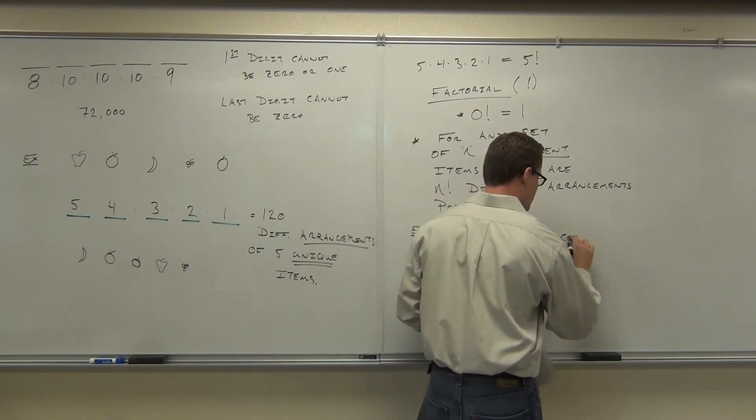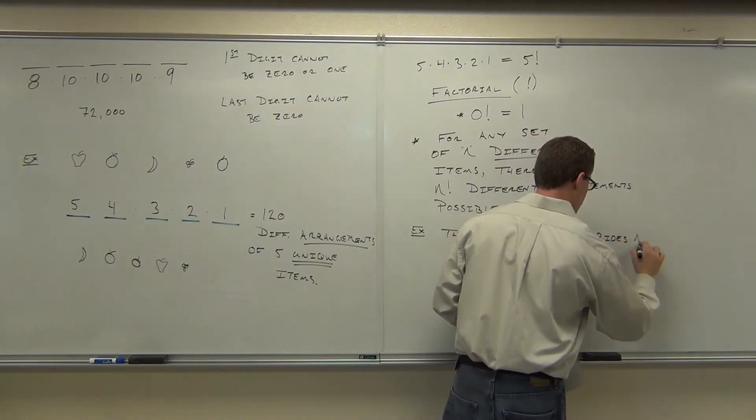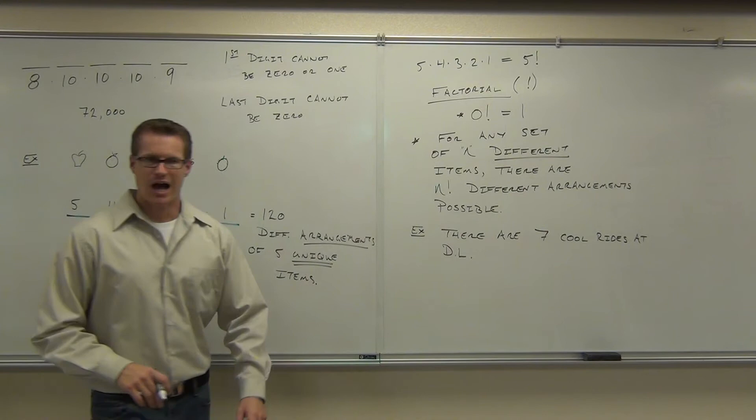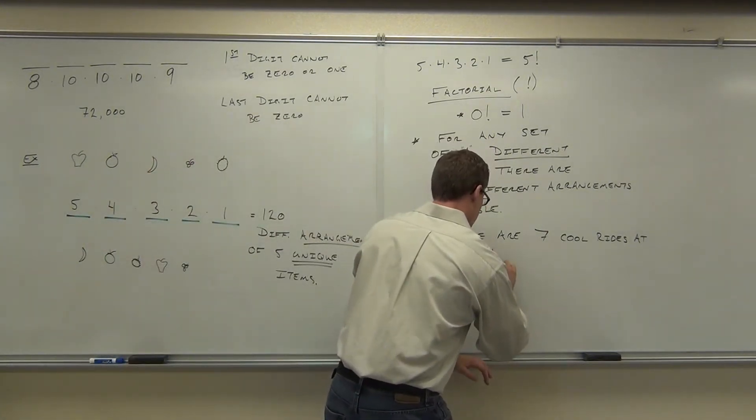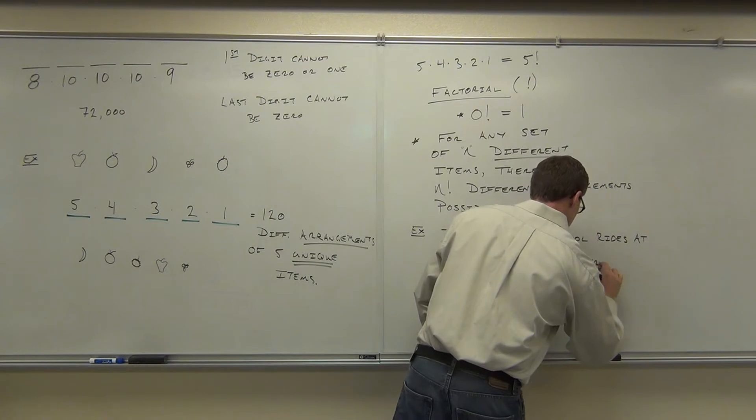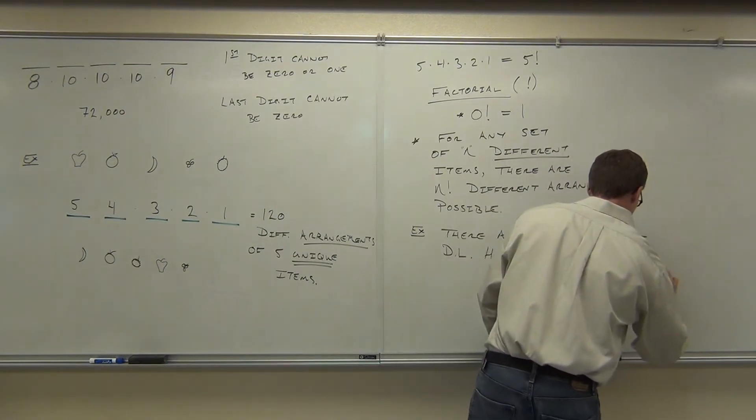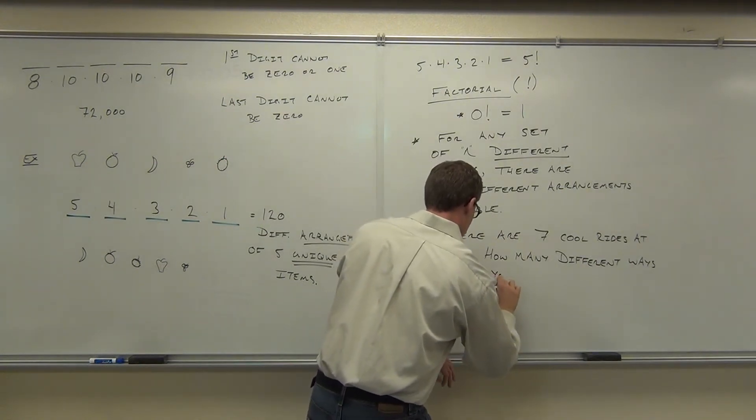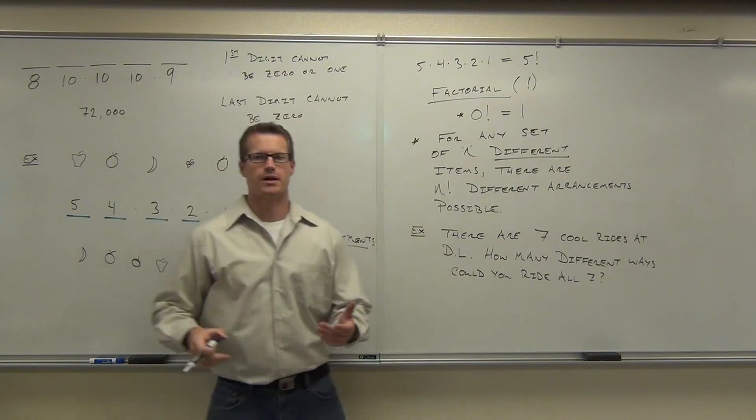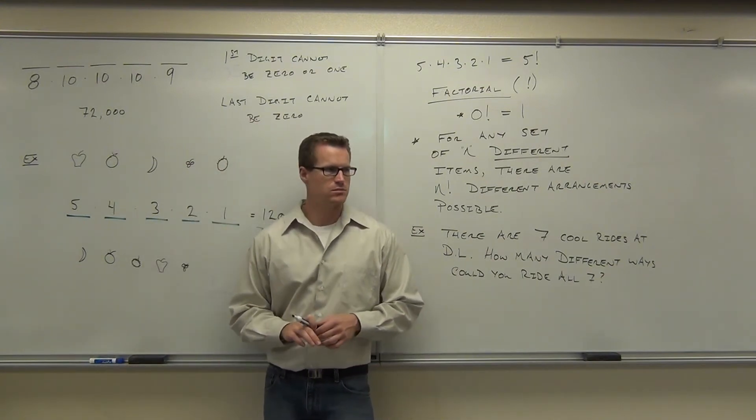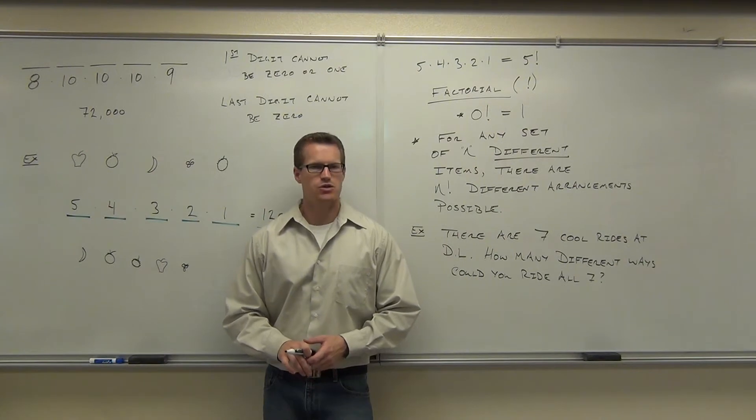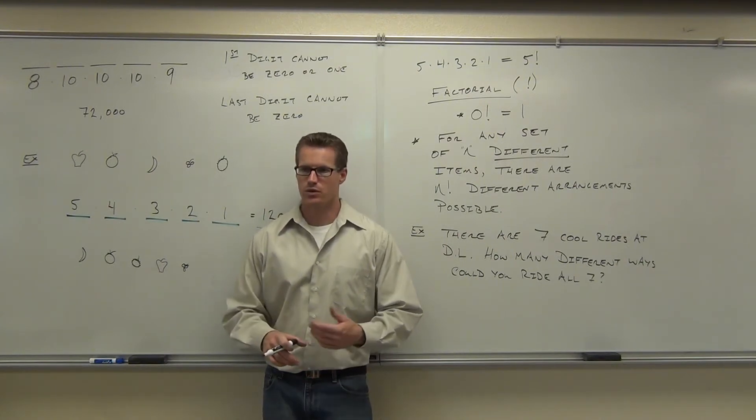There are seven cool rides at Disneyland. How many different ways could you ride all seven? Let's think about it. Are the rides unique? Are they distinct? Yes. Indiana Jones is not the same as Space Mountain. Those are seven distinct rides you're going on. How many choices would you have for your first ride? Seven. Then after you went on that one, you only have? Six.